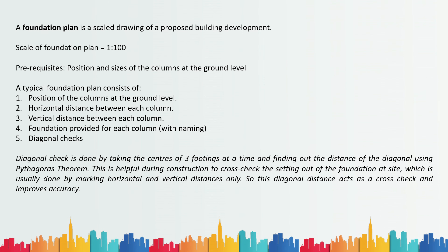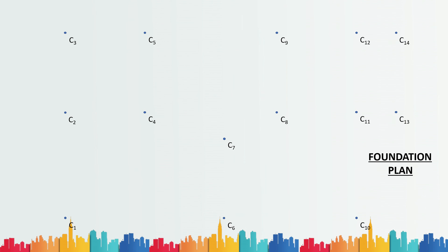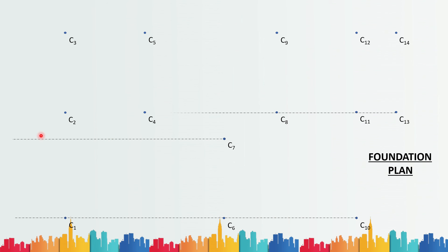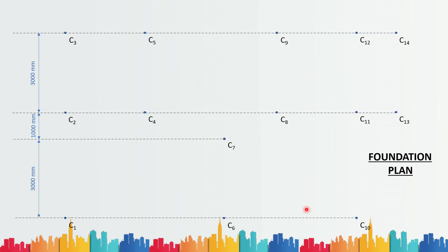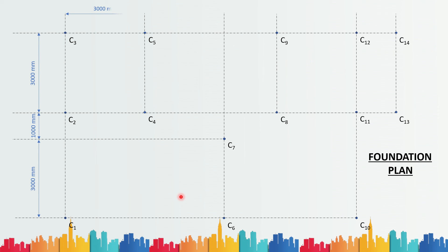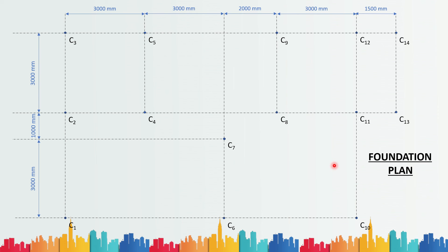Now let's move on to see step by step how the foundation plan is drawn. First, I have shown the position of the columns, from C1 to C14. We draw centerlines horizontally through each column and write the vertical center-to-center distances between each column. Similarly, we draw vertical lines passing through each column and write the horizontal center-to-center distances. This gives us a grid showing the position of every column and the center-to-center distances in both vertical and horizontal directions.